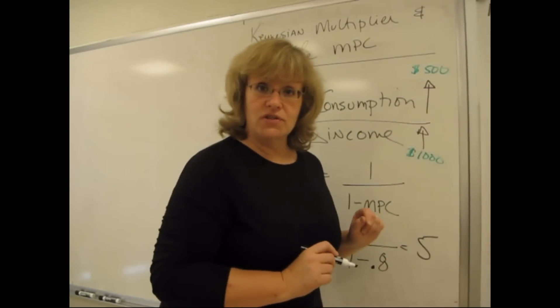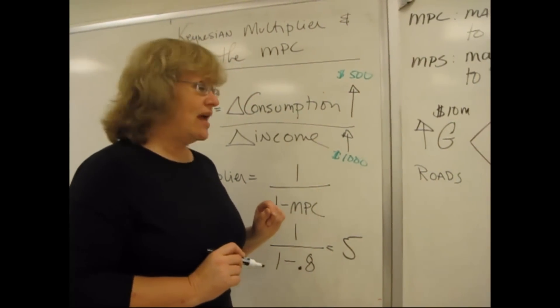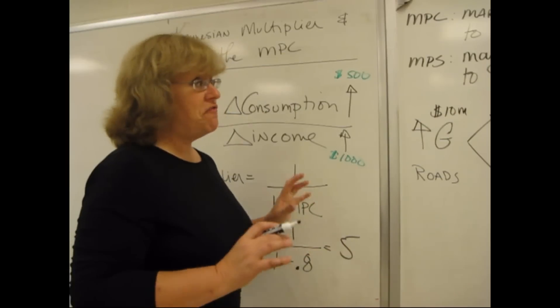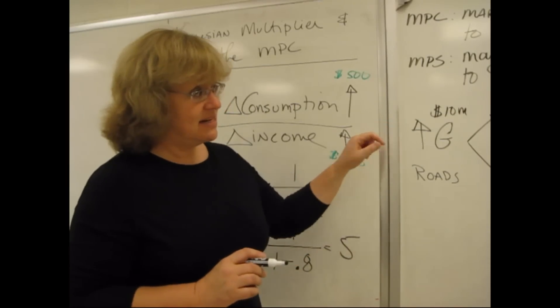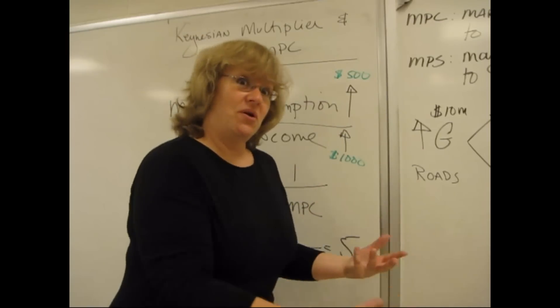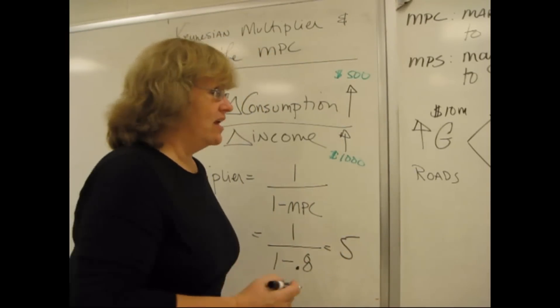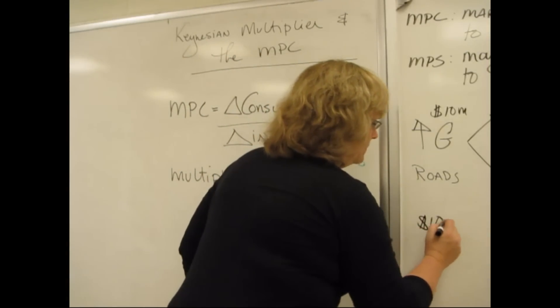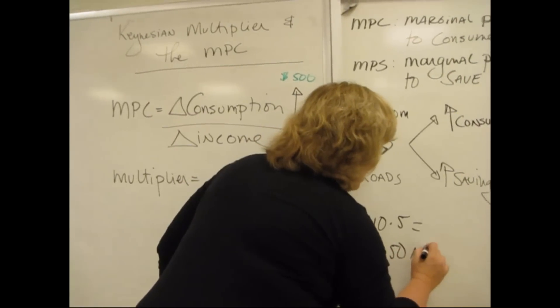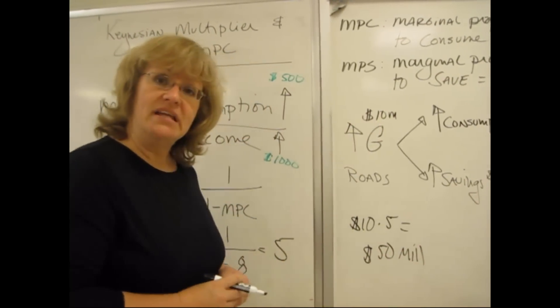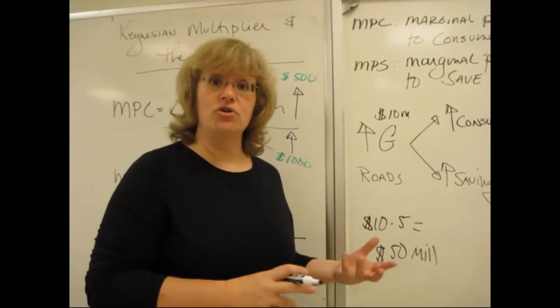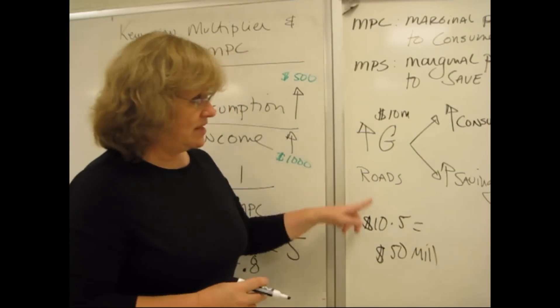This 10 million dollars of original spending is going to end up causing a multiplied increase in total spending by five times that amount. So the final impact when we add up the 10 and the 8 and the 6.4 and if we kept going and calculating all the ripples over and over and over again, we would see a final change of 10 times 5 or a total of 50 million dollars worth of multiplied spending in the economy as a whole. So the multiplier itself is connected to this idea of the marginal propensity to consume in this sort of way.